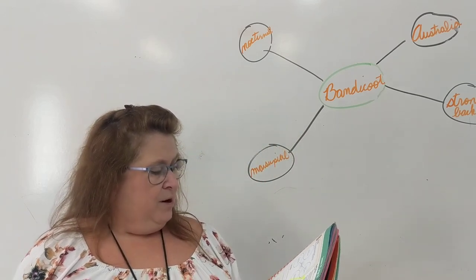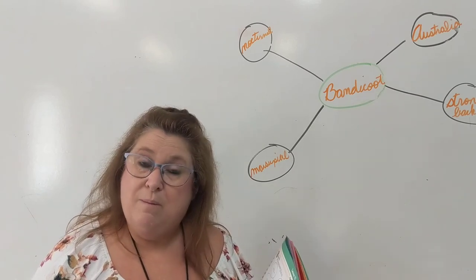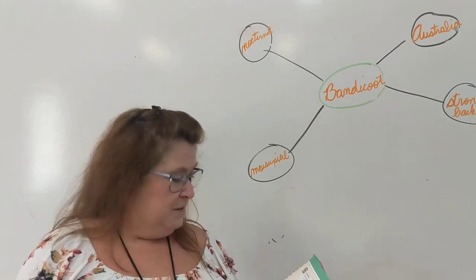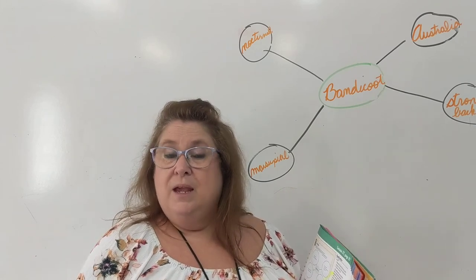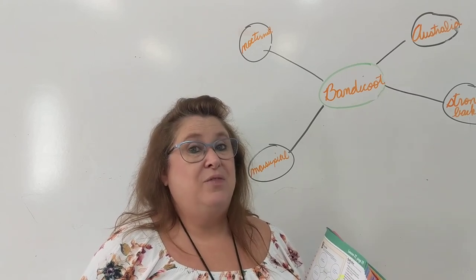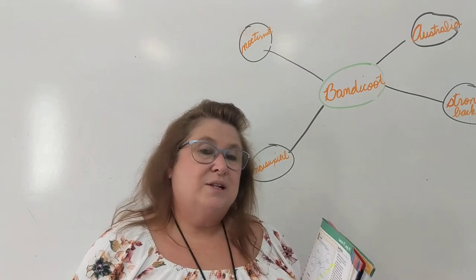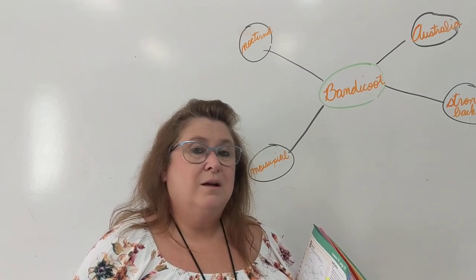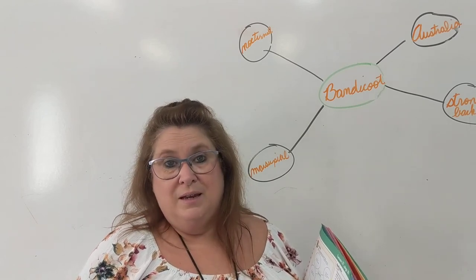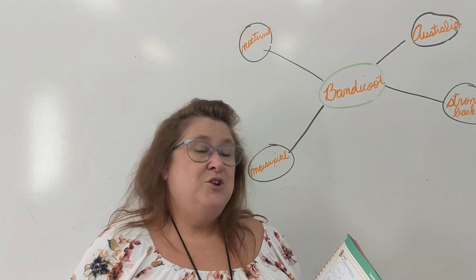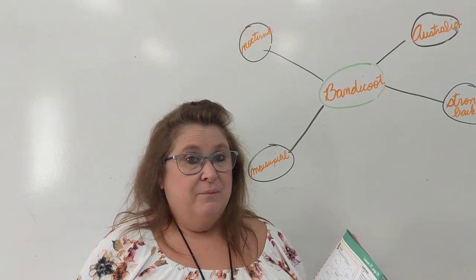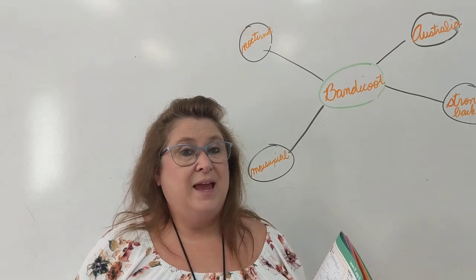Section three says write one interrogative sentence about something you still want to know about bandicoots — something I just didn't tell you. So you write an interrogative sentence. Remember, your declarative sentence is a complete thought that starts with a capital letter and ends with a period. Your exclamatory sentence is one complete thought beginning with a capital letter and ending with an exclamation point. Your interrogative sentence is a complete thought that begins with a capital letter and ends with a question mark.